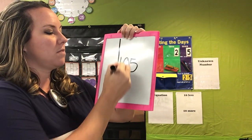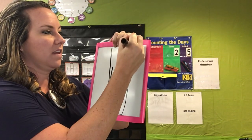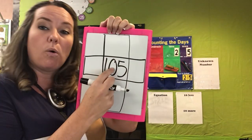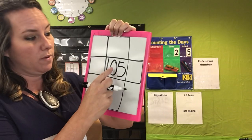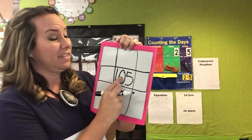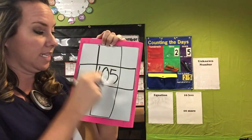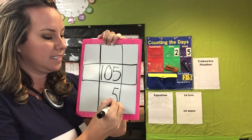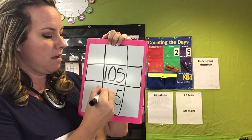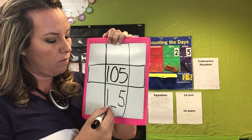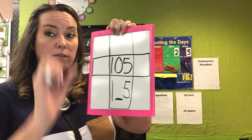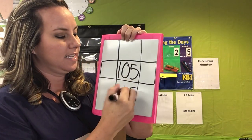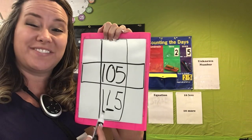If we have the number 105, we are going to do 10 more and 10 less. That means only this middle one is going to be changing. Let's do 10 more. If we have zero 10 sticks, that means the ones stay the same and the hundreds stays the same. We only need to change the 10 sticks. So zero 10 sticks, add a 10 stick — that's one 10 stick. So instead of 105, we're gonna have 115.